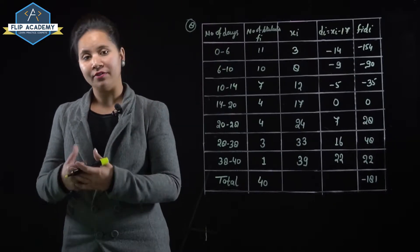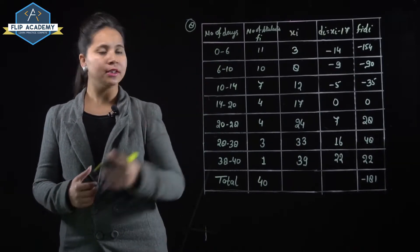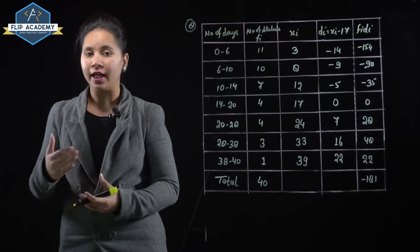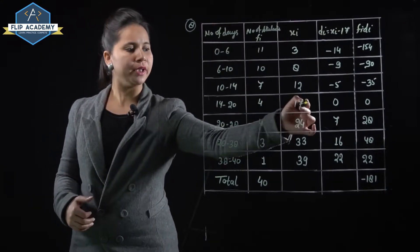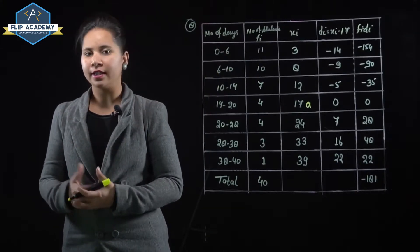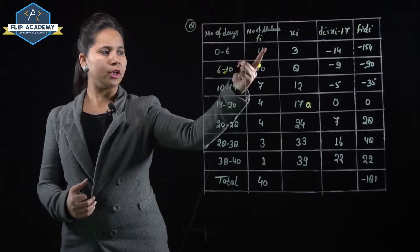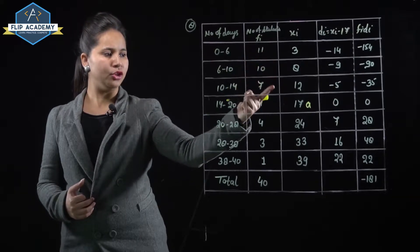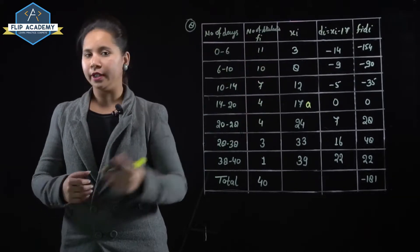Now deviation will be xi minus 17. 17 is the assumed mean. We have taken assumed mean as 17. The di values are calculated as xi minus a. These are minus 14, minus 9, minus 5, 0, 7, 16, and 22.